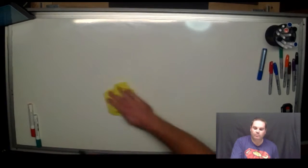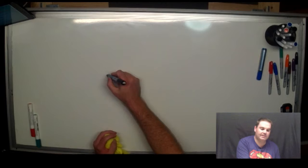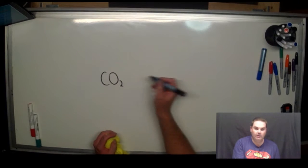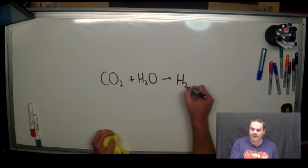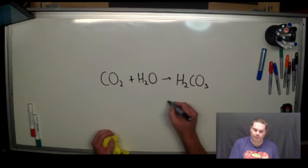In the air, one of the most common gases we've got is carbon dioxide. When that dissolves in water and falls to the ground, we actually get carbonic acid, H2CO3.